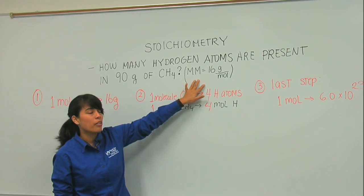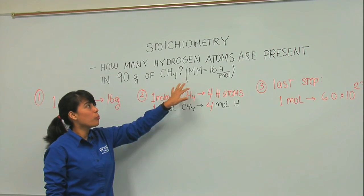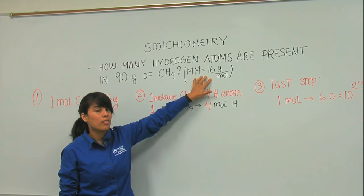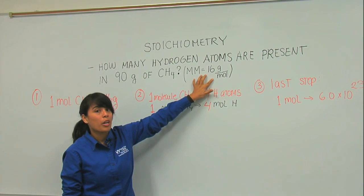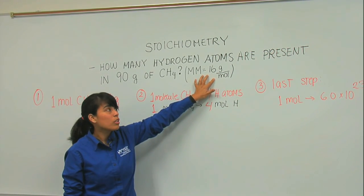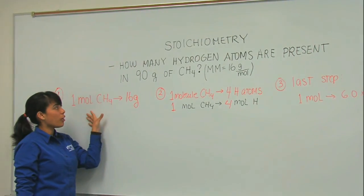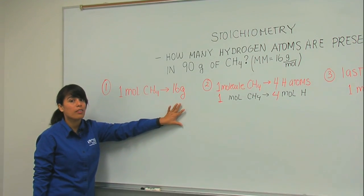So let's do that. First, I need to write down what I know. What I know is this information that they have given me, the molar mass. What does that mean? They're telling me that for every mole, I have 16 grams of methane. So I put it here. One mole of methane weighs 16 grams.